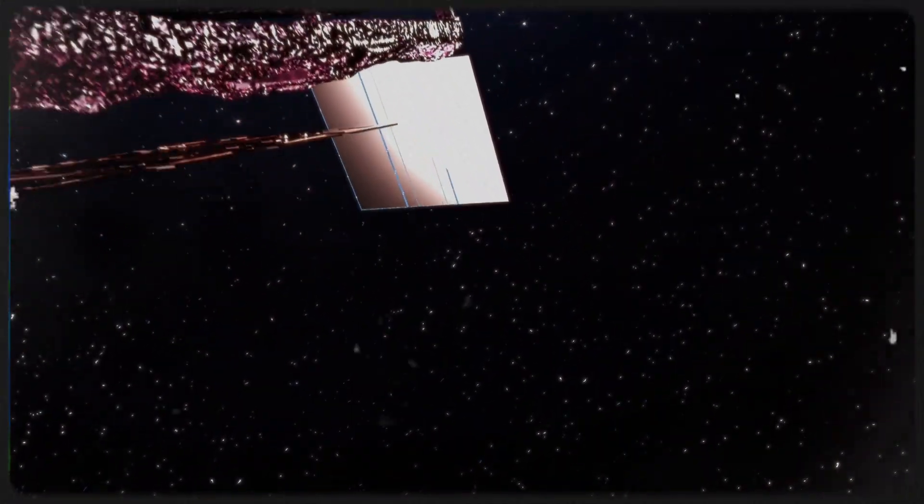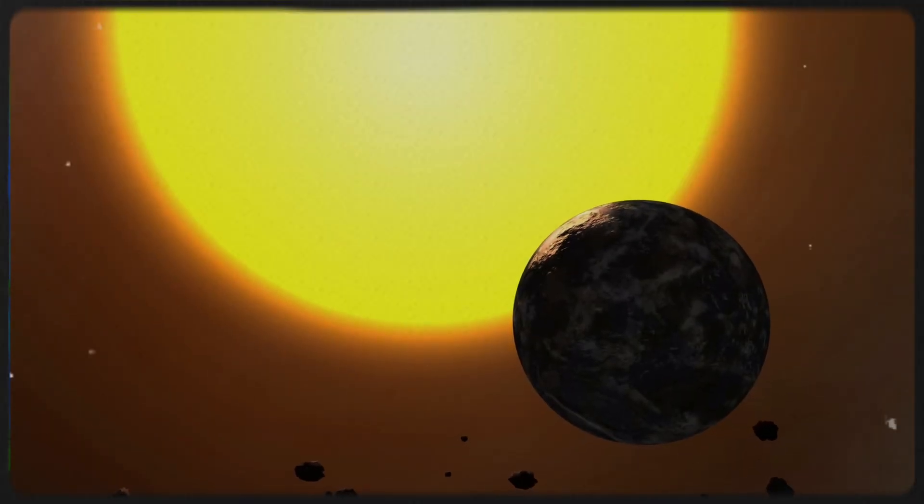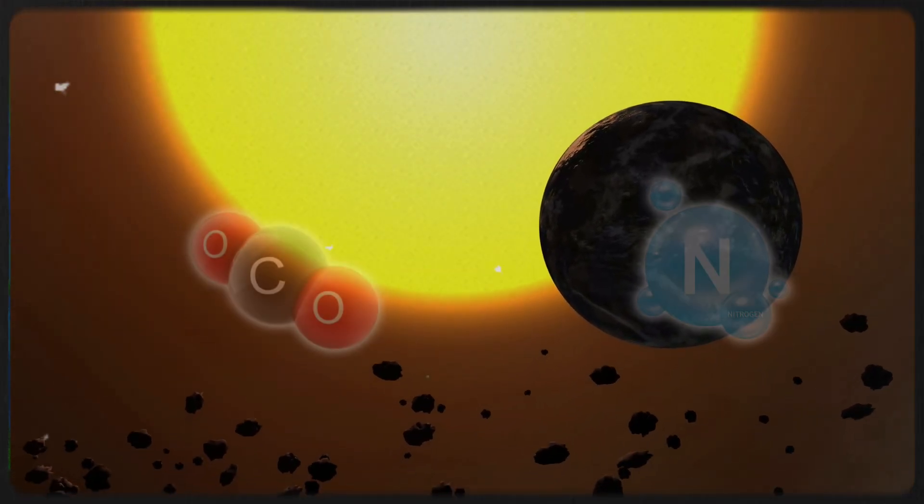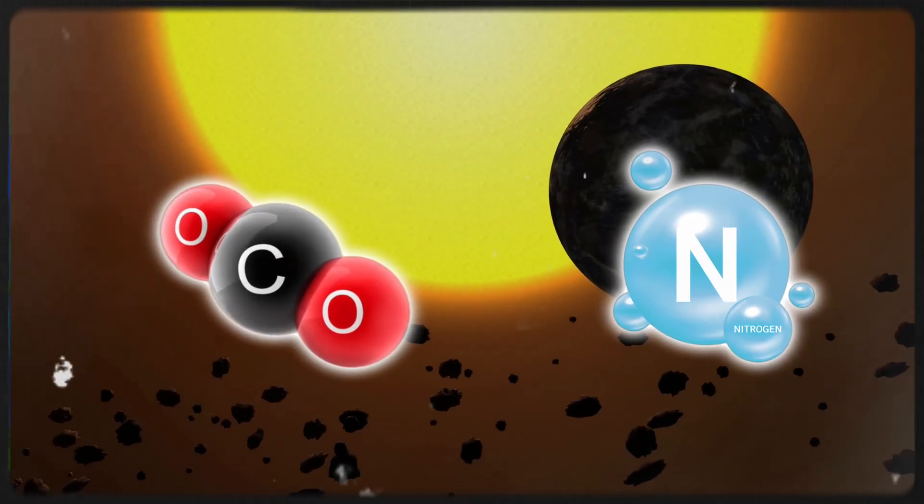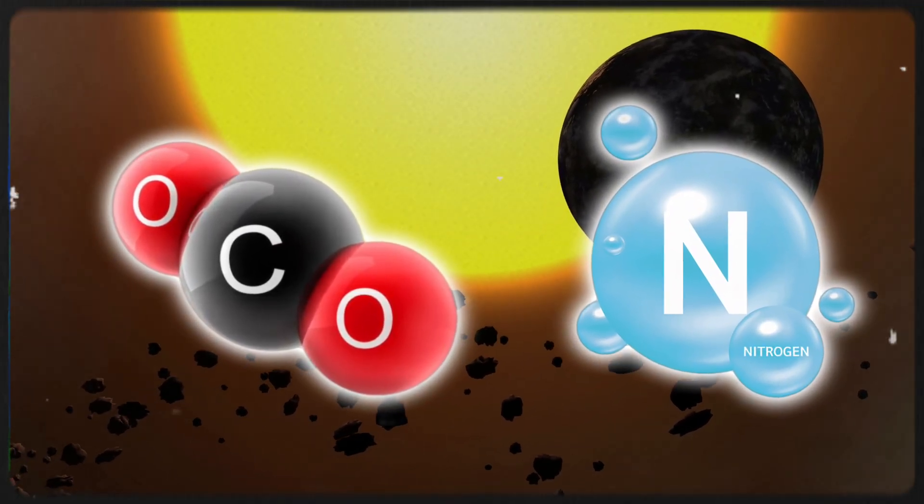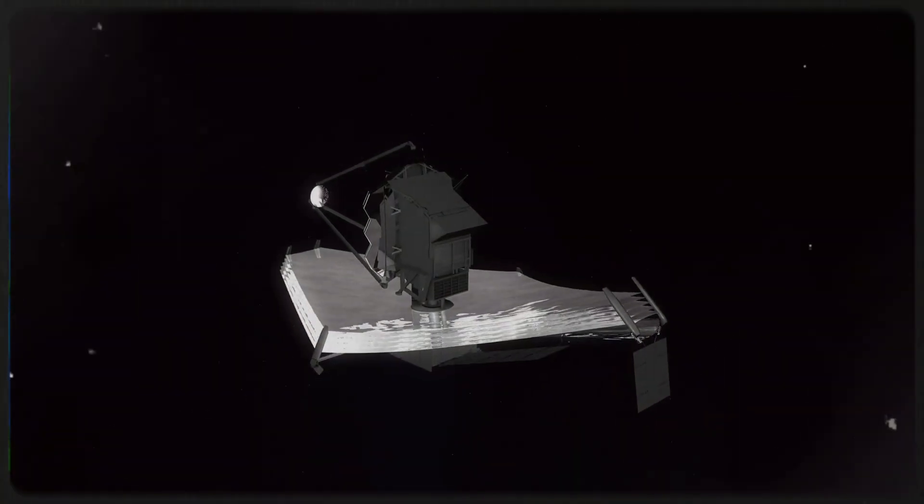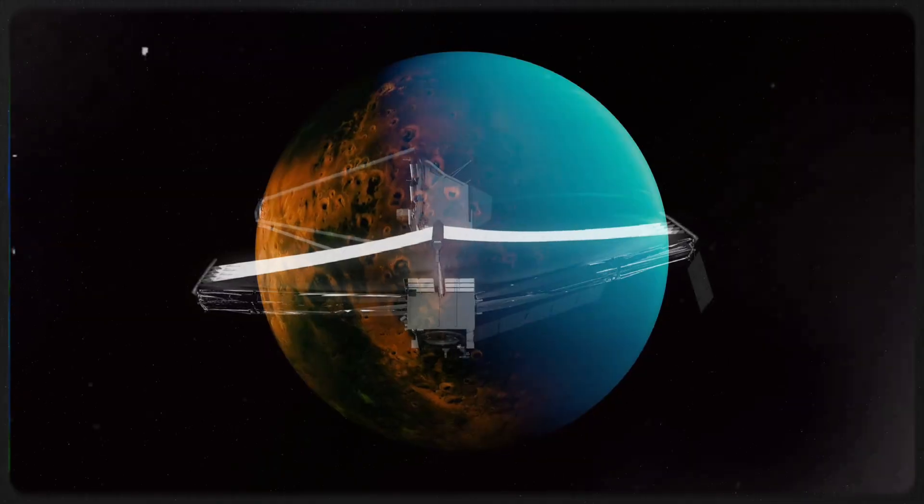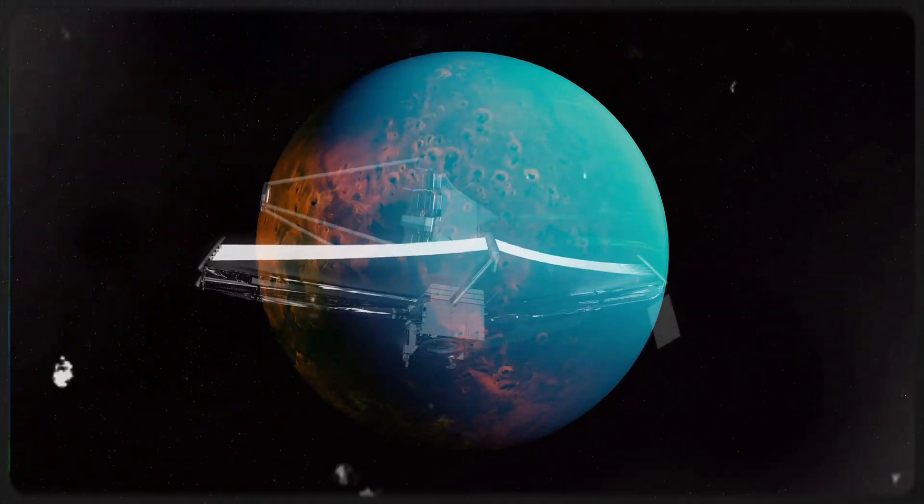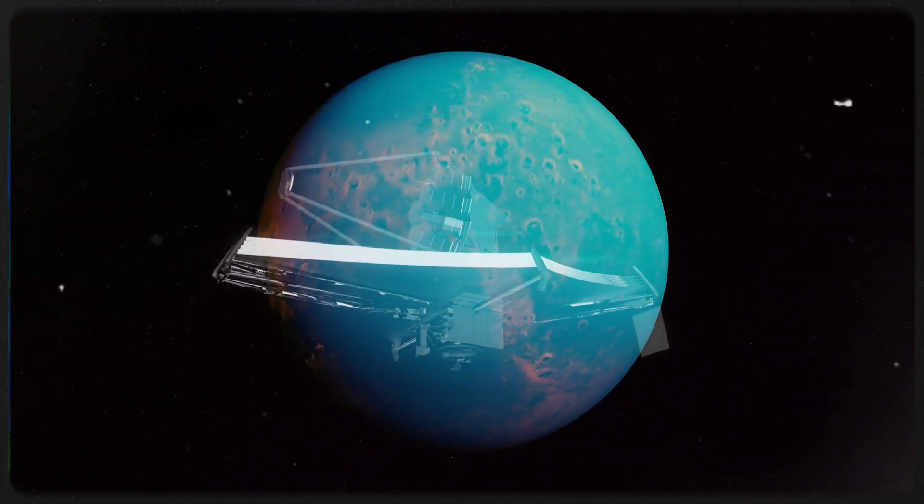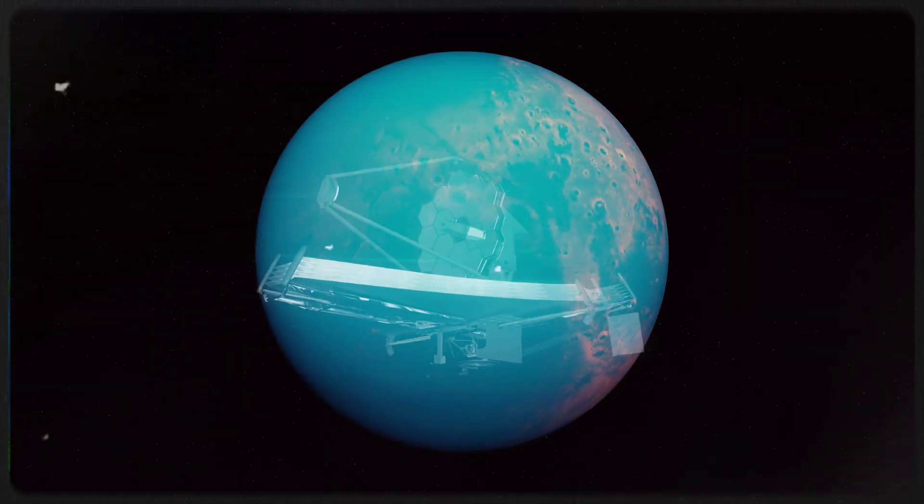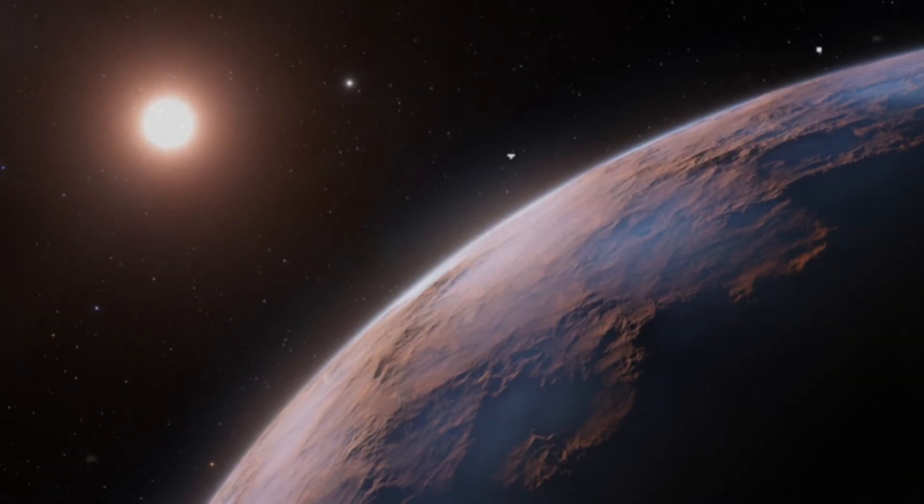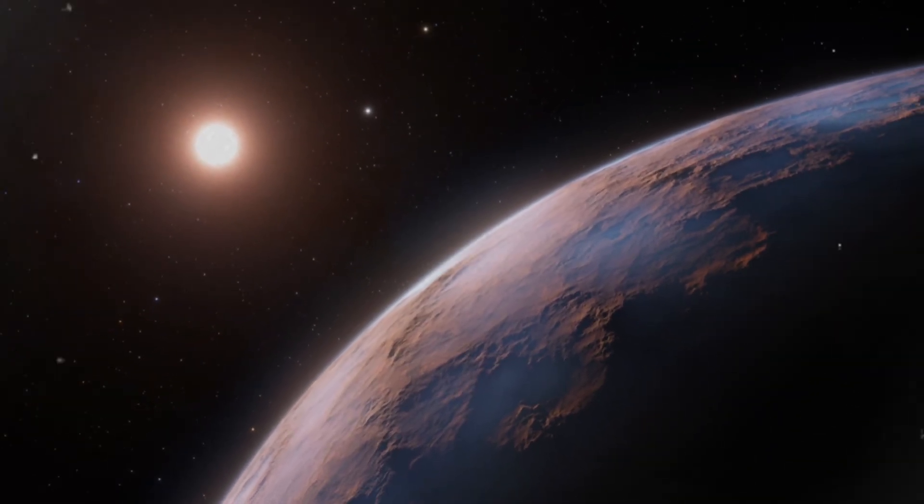But the story doesn't end there. Some researchers suggest that Proxima b might still cling to a thin atmosphere, potentially consisting of heavier gases like carbon dioxide or nitrogen. If present, this could offer some protection against the star's harsh radiation. Thanks to the unparalleled capabilities of the James Webb Space Telescope, we now have the clearest look yet at Proxima b's surface, and what it reveals is both captivating and enigmatic. The planet appears to have rocky terrain similar to Earth's but with stark contrasts. The hemisphere facing Proxima Centauri is likely a scorched, desert-like wasteland, enduring relentless heat.